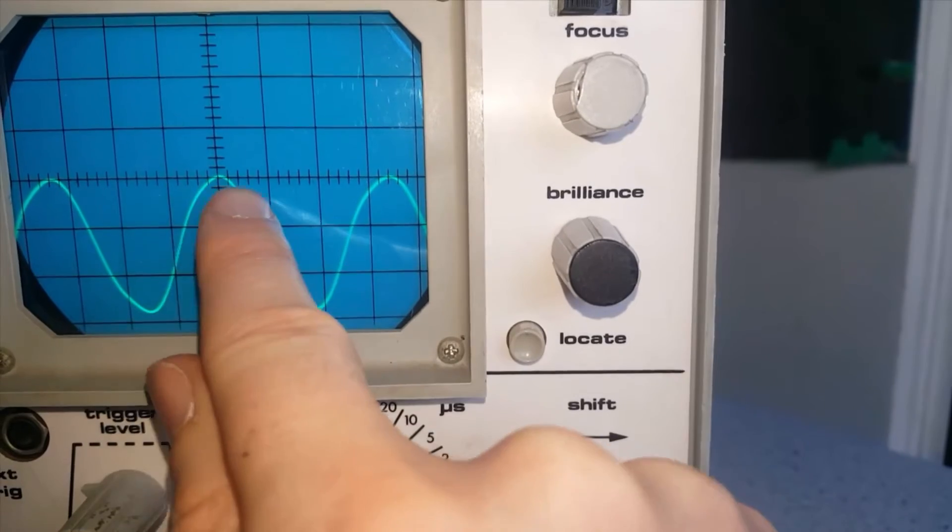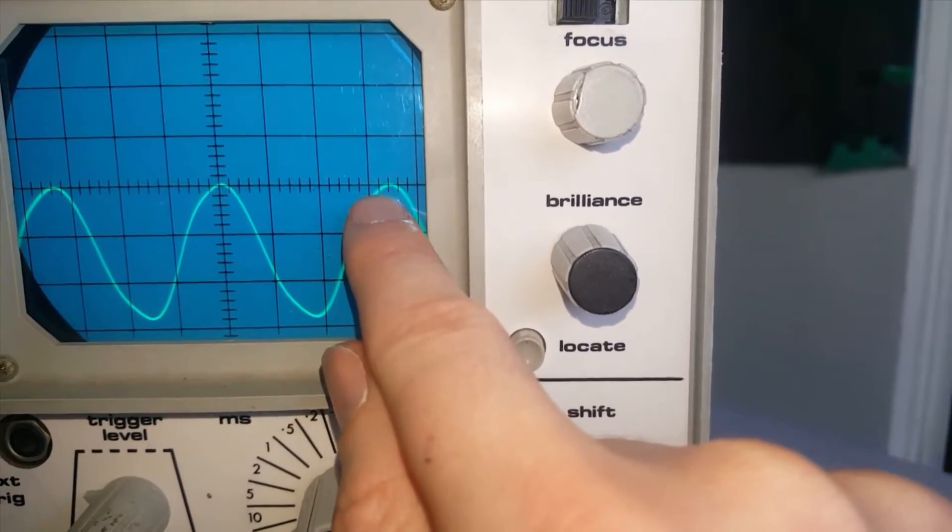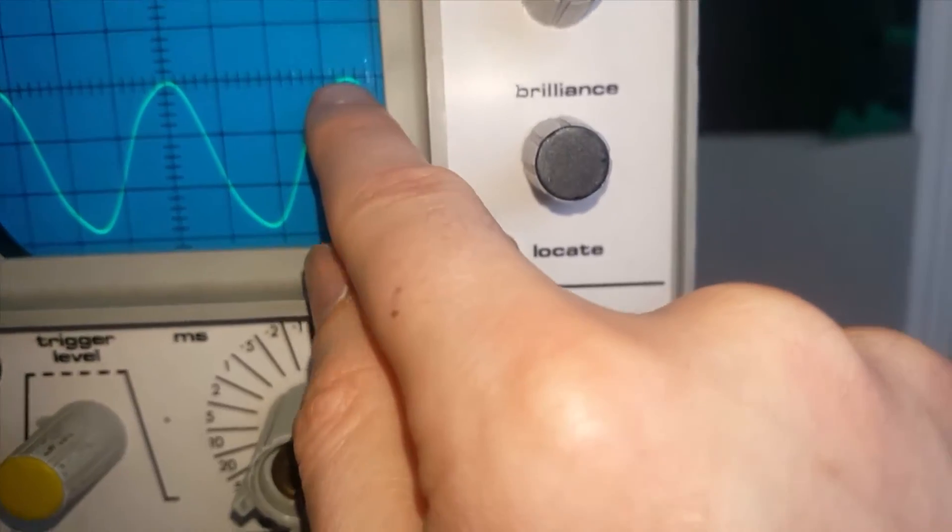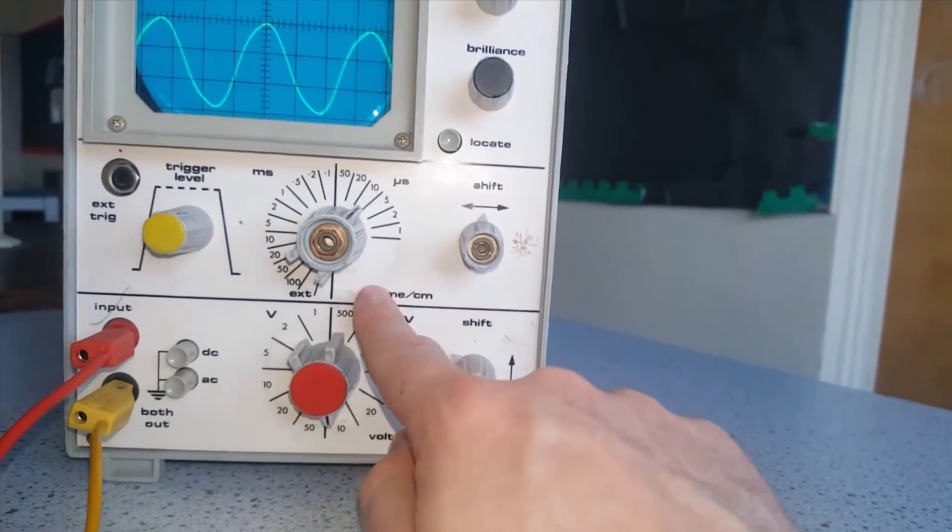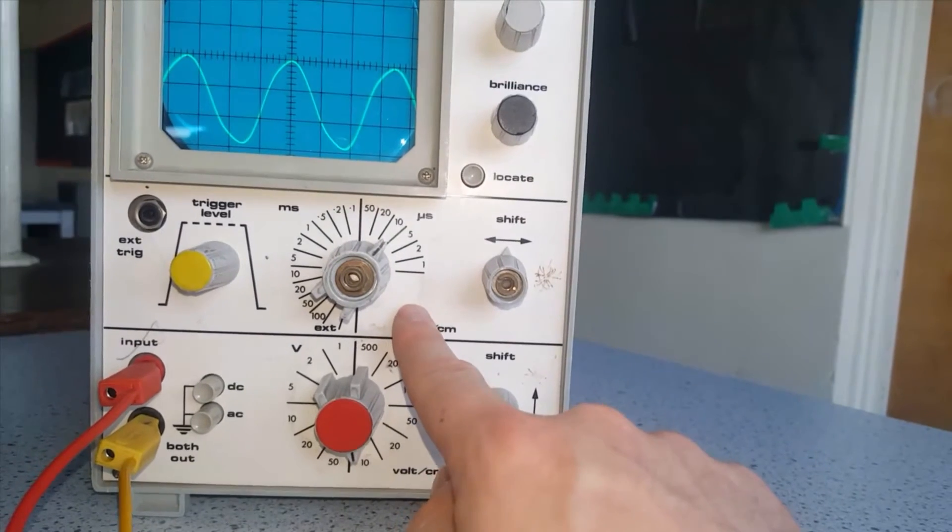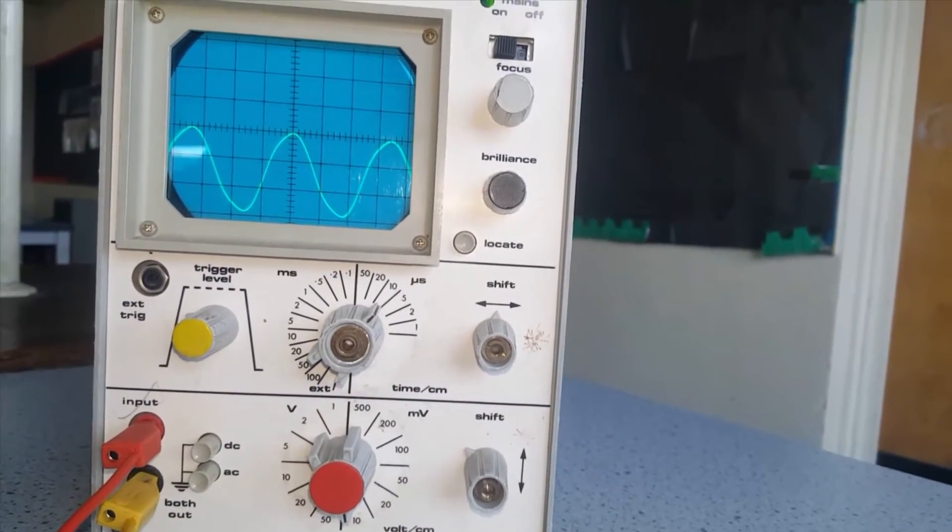So 1 centimetre, 2 centimetres, 3 centimetres, 3.4 centimetres. So 3.4 times 10 microseconds gives us 34 microseconds as our time period.